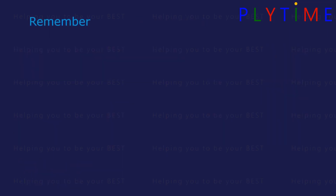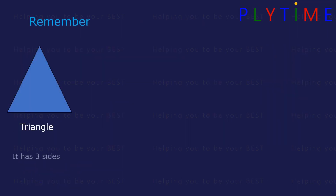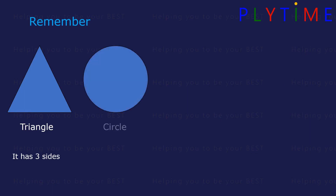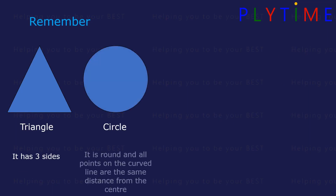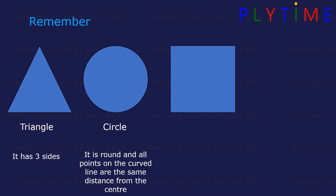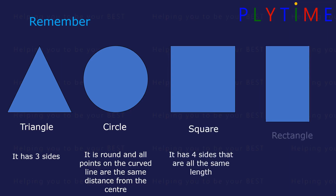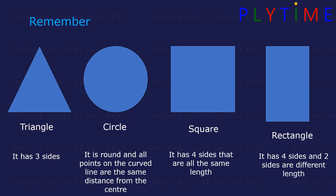Remember: triangles have three sides. Circles are round. Squares have four sides and they're all the same length. Rectangles have four sides but two sides are a different length.